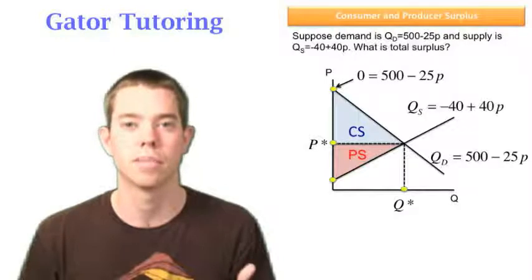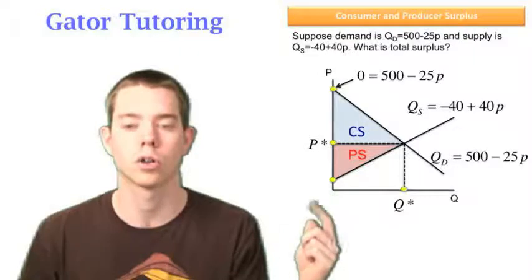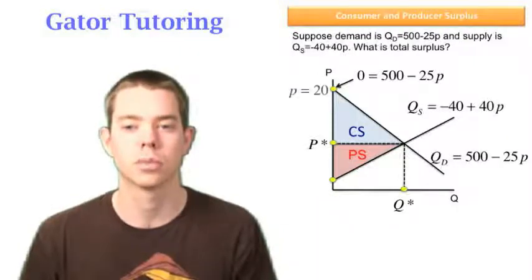But we do see that quantity is zero at that point. We're not going over at all on quantity. So we solve for P to be equal to 20 when quantity demanded equals zero.